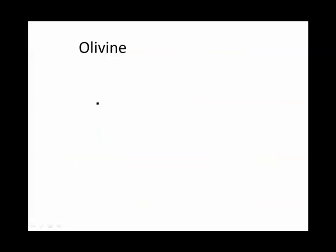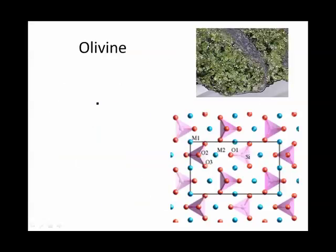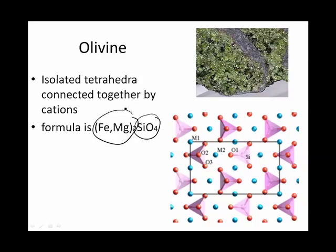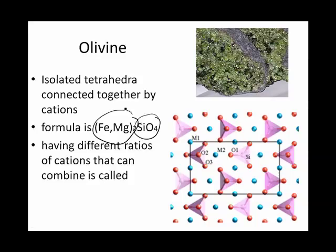That's the case with olivine, this olive green mineral. Olivine is composed of isolated tetrahedra connected together by cations. The formula FeMgSiO4 tells you that it contains isolated tetrahedrons, SiO4, but also that the iron and magnesium can substitute for each other. Having different ratios of cations like this could be called a solid solution.